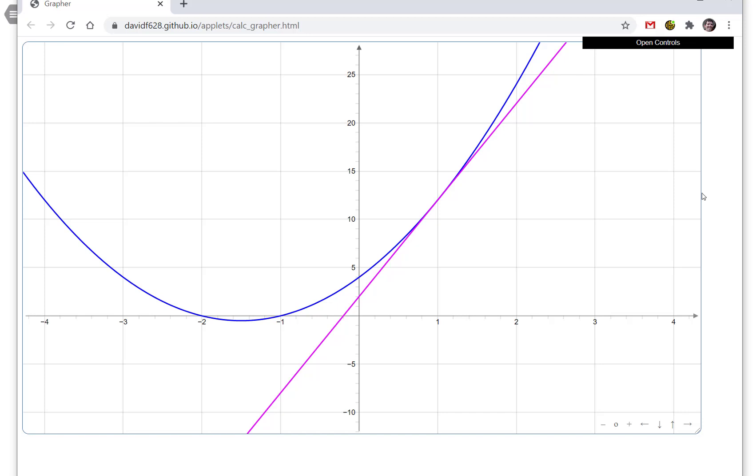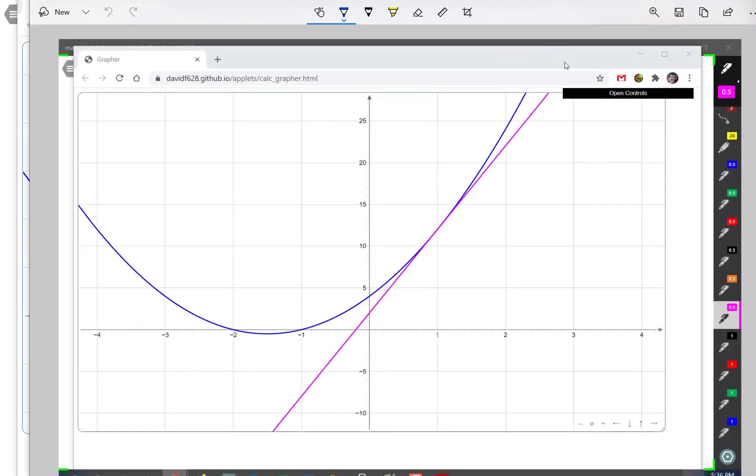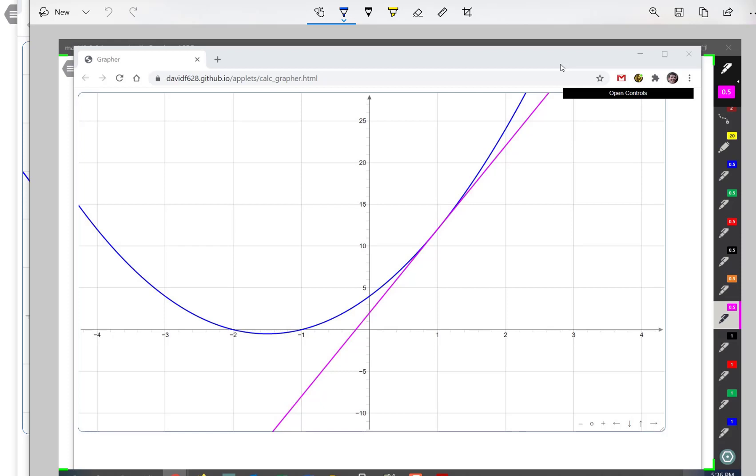Now, what we want to do is approximate the value of the function at a very small interval around this particular number. So for instance, let me bring that up so I can draw on it. Alright, so for instance, if here's my point at 1 and that's the coordinates 1, 12. Now what I want to do is go just slightly around it and I think we said 0.2. So I'm going to go to 1.2 which I think is right here.